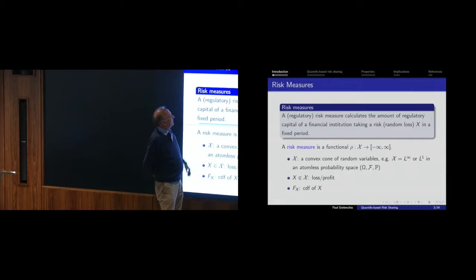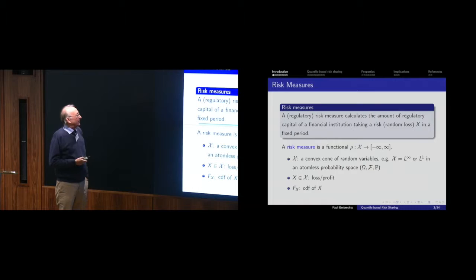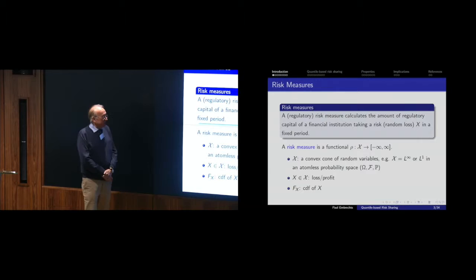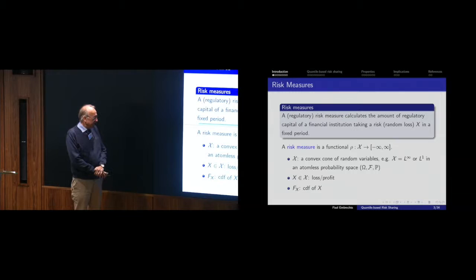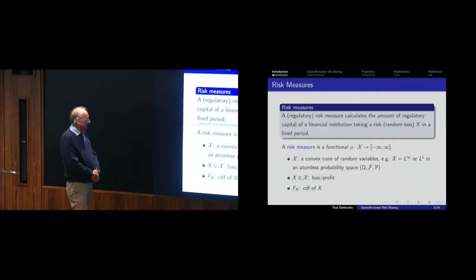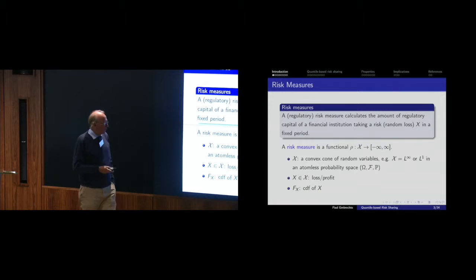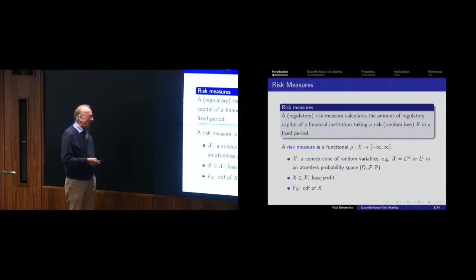Risk measures are well known to this audience. I'll look at the regulatory situation: calculating the amount of regulatory capital of a financial institution taking a random loss X in a fixed period. Nothing in my talk will be about dynamic risk measures. We take the standard description — a functional from a space of random variables to the extended reals, defined on a convex cone. The typical interpretation is losses are positive and profits negative.